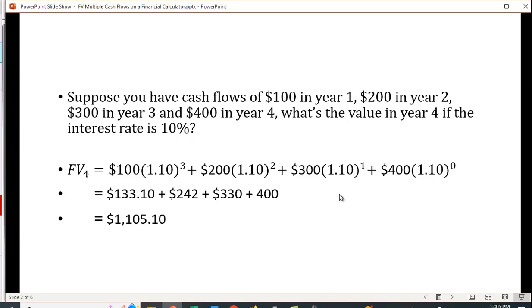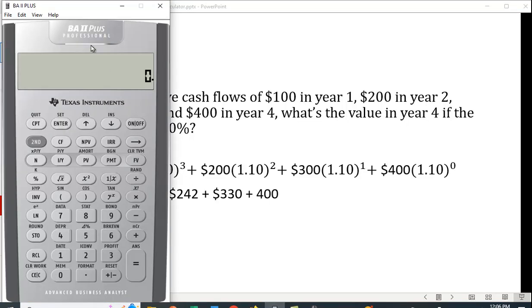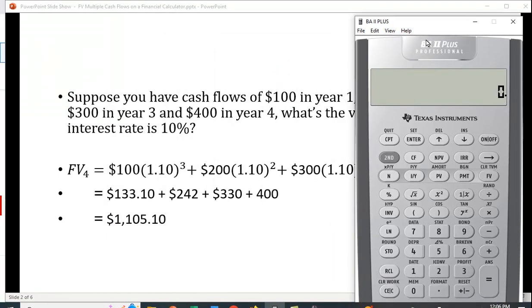Now this isn't too bad because there's only four cash flows and we really only have to find three future values, but if we do this we come up with eleven hundred and five dollars and ten cents, and we can verify that on the financial calculator.